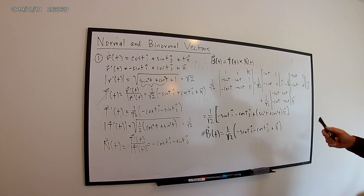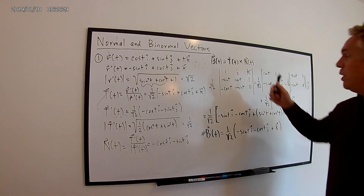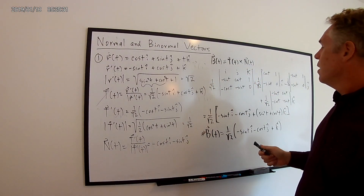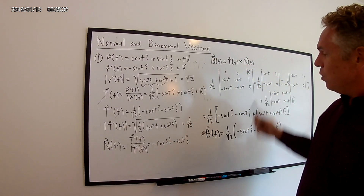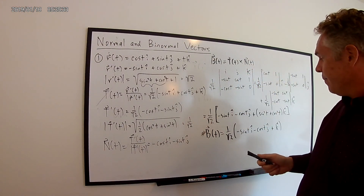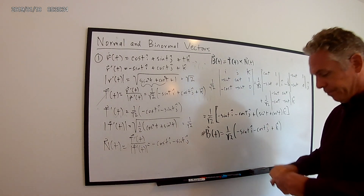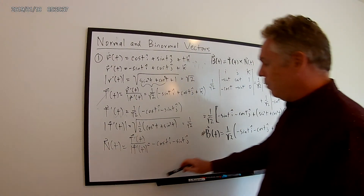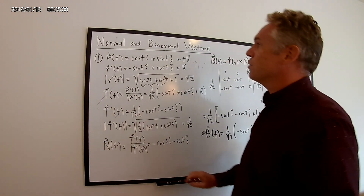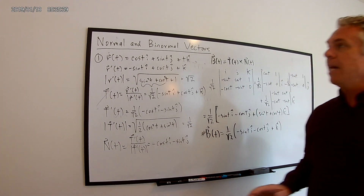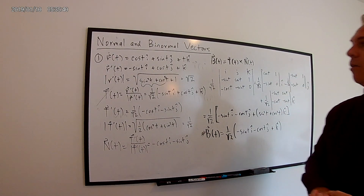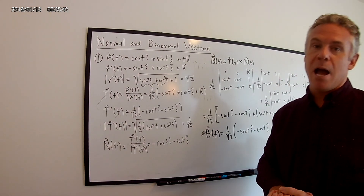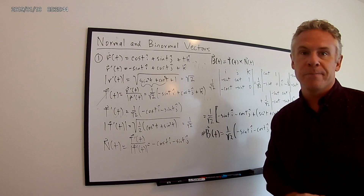That's a good example problem for finding the normal and binormal vectors. In class, we will talk about velocity and acceleration and do some practice problems on those topics.